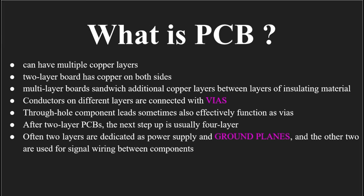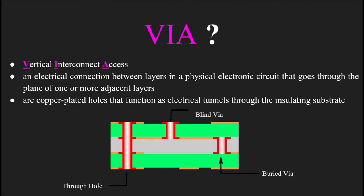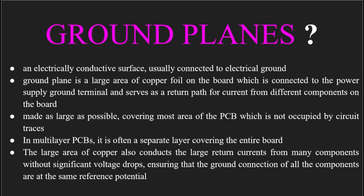Now I'll discuss vias. The full form of via is Vertical Interconnect Access. It is an electrical connection between layers in a physical electronic circuit that goes through the plane of one or more adjacent layers. Vias are copper-plated holes that function as electrical tunnels through the insulating substrate. As shown in the figure, there are three types: through-hole vias, which conduct through all layers; blind vias, which connect layer 1 and layer 2; and buried vias, which form a conductive path between layer 2 and layer 3.